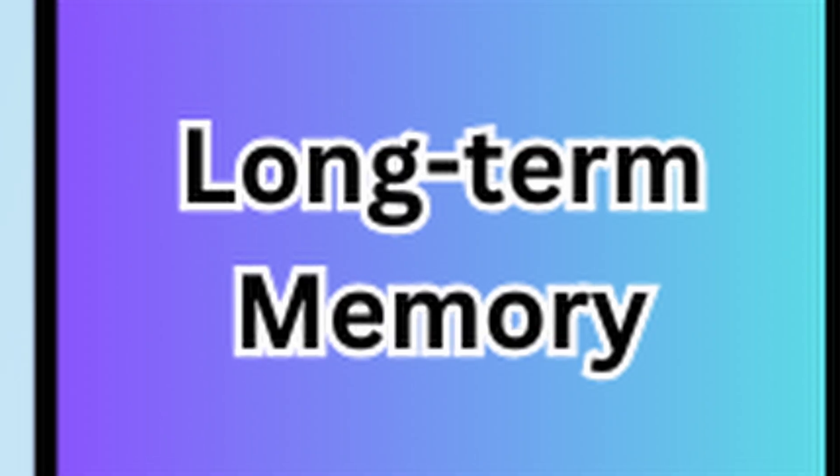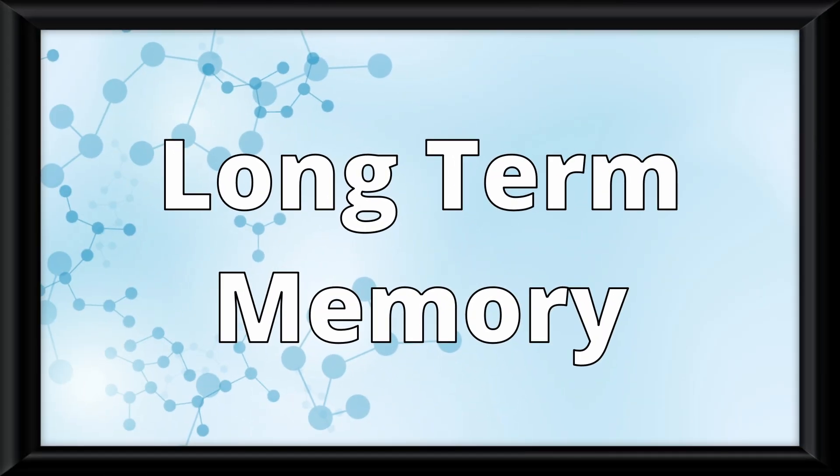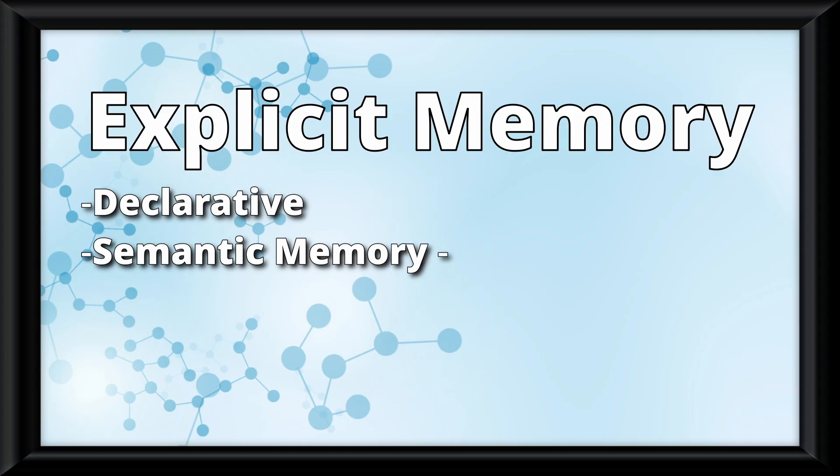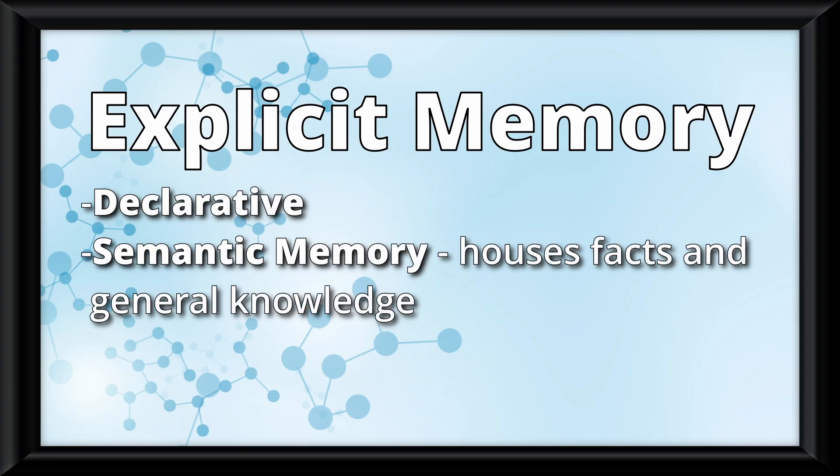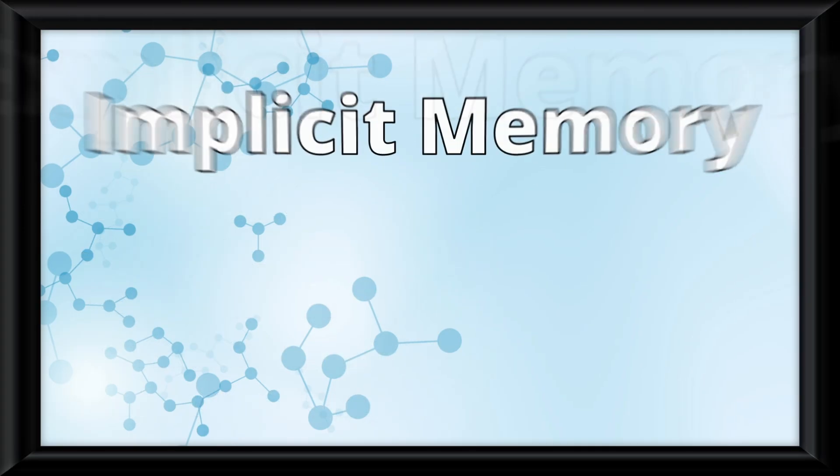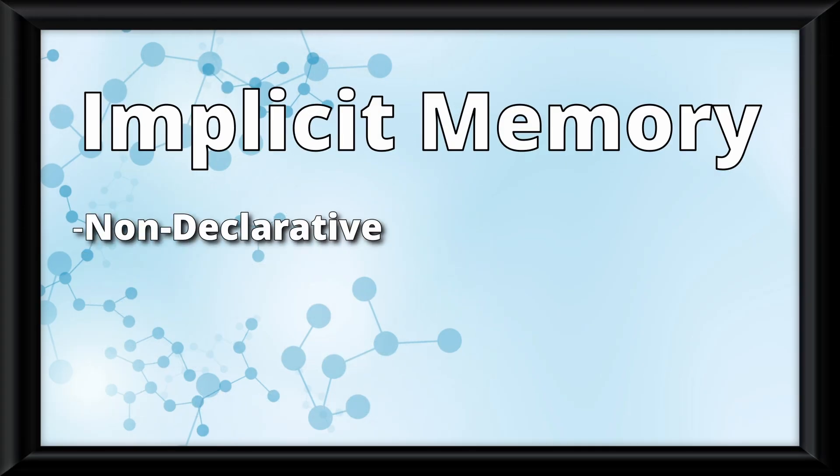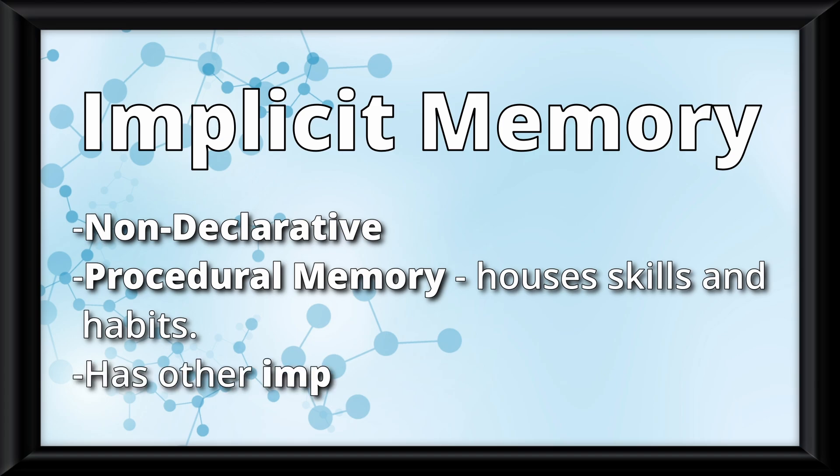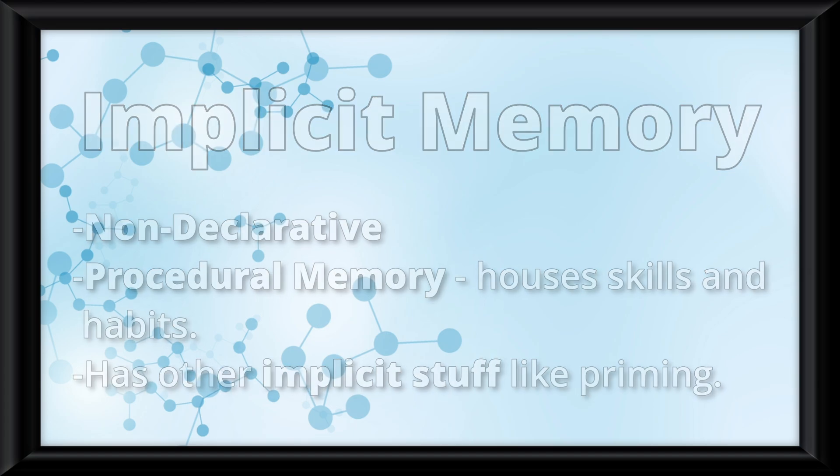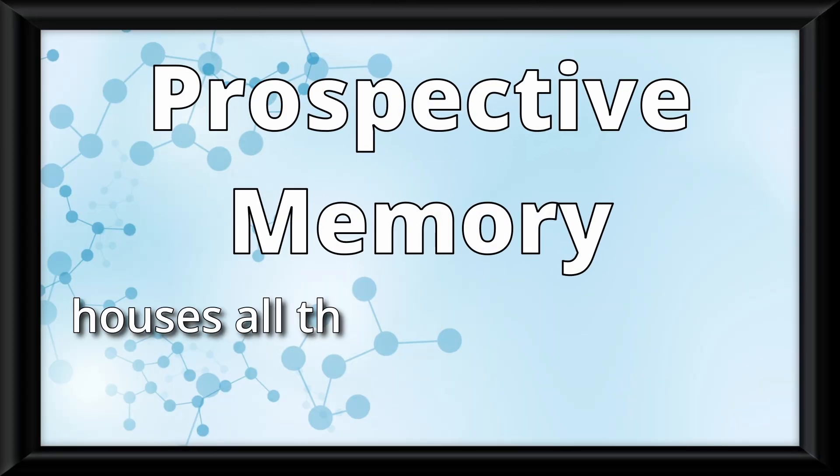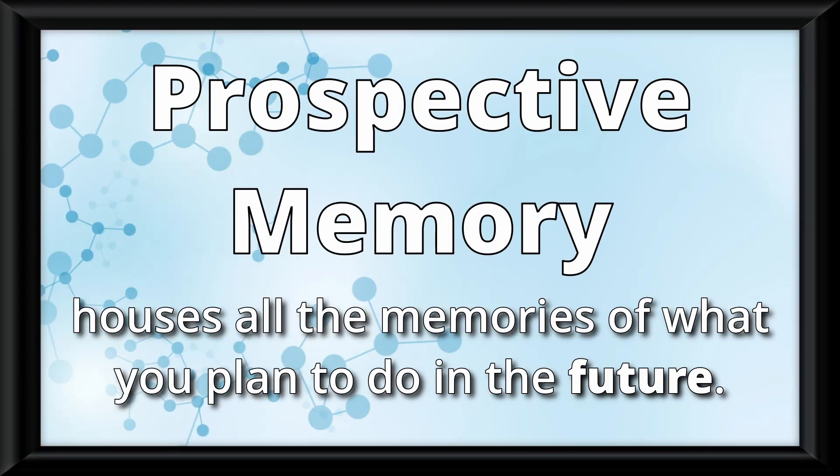Let me lay down the biggest truth there is. Long-term potentiation is the biological reason for why information goes from short-term to long-term memory. It is caused by two neurons firing together to make it more efficient. Long-term potentiation is the entire reason the long-term memory can exist. But really quickly, let's zoom into the long-term memory. Let's talk about the different types of memories stored here. Explicit memory is known as declarative. It houses the semantic memory, which houses facts and general knowledge, and the episodic memory, which houses personal experiences and events. Implicit memory is known as non-declarative. It has in it the procedural memory, which houses skills and habits, and it also has other implicit stuff like priming. Finally, even though it isn't one of the two major types of long-term memory, prospective memory houses all the memories of what you plan to do in the future.